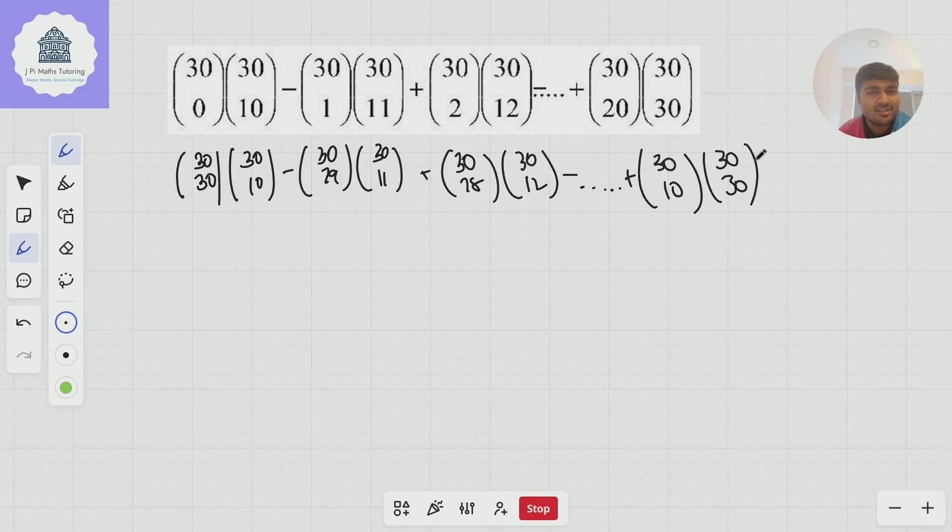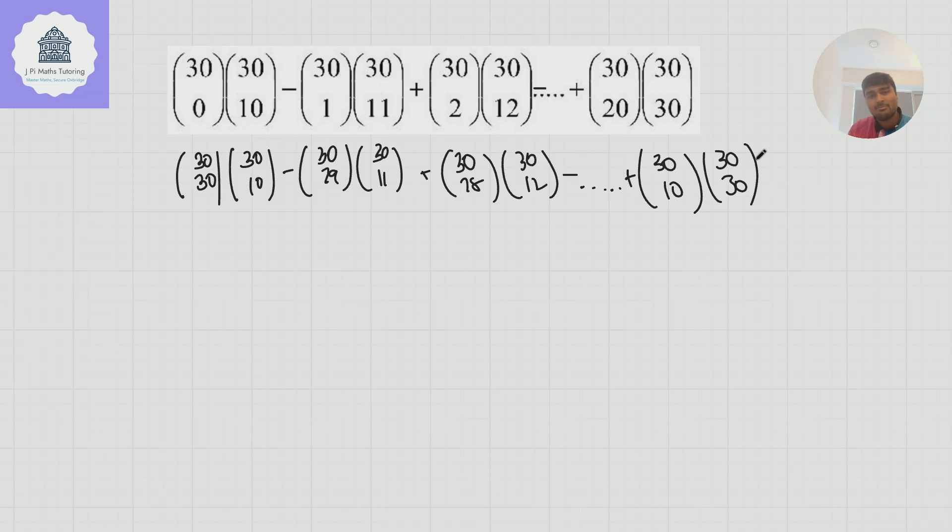Now why would I even want to do this? What's the point? The idea is now these bottom numbers add up to 40. And if you think about maybe this for a second, you might realize that actually then we can start to think about coefficients of certain numbers. This number here simply represents the coefficient of something in a certain binomial expansion.